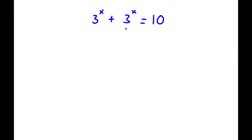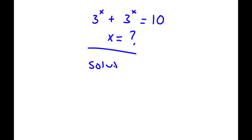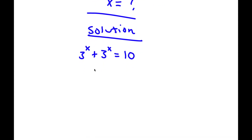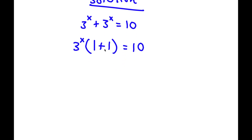Alright, so now I have 3 to the power of x plus 3 to the power of x is equal to 10, and I want to find the value of x. First, I'm going to factor out 3 to the power of x from the left-hand side, because both terms are 3 to the power of x. So now I have 3 to the power of x times 1 plus 1, which is 1 plus 1, is equal to 10. And 1 plus 1 is 2, so I have 3 to the power of x times 2 is equal to 10.